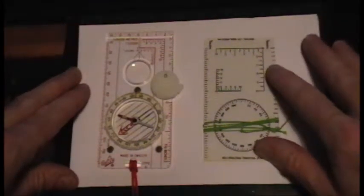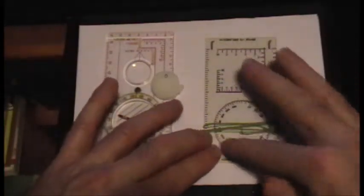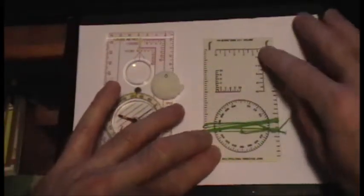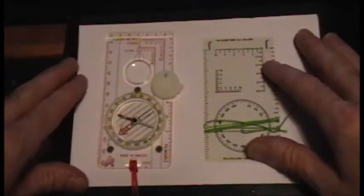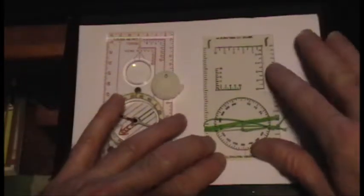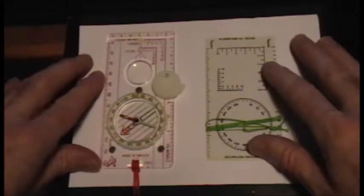That is a very simple procedure as well. You can see the protractor there. It's got the scales as well. You can use it as a roamer, but what I use this mostly for is for calculating grid bearings.